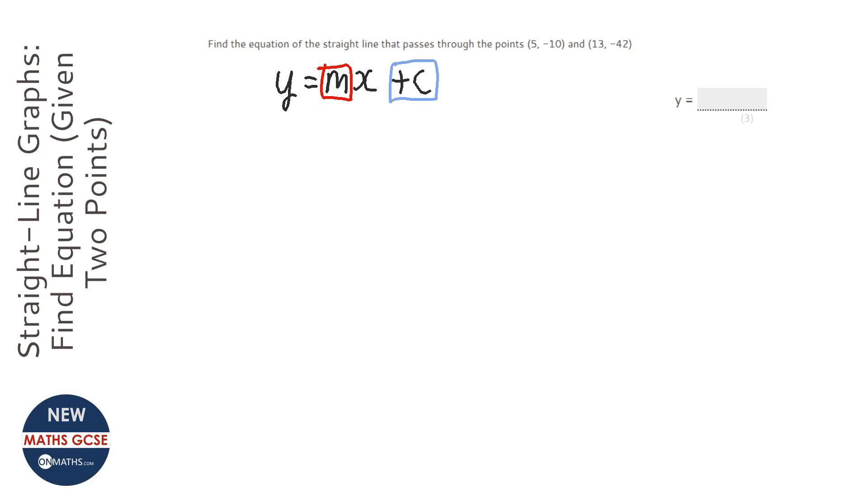The first thing we need to find out is the gradient, so we're going to work out m first. To do the gradient, the formula is change in y over change in x. So, if you have a look, we start off at 5 for the x and minus 10 for the y, and then we go to 13 for the x and minus 42 for the y.